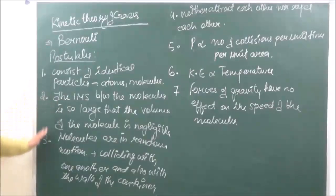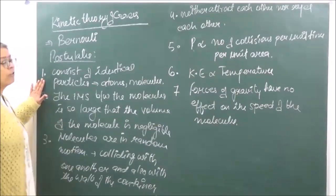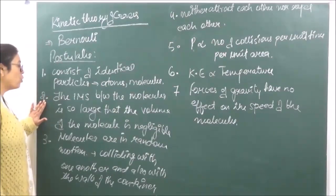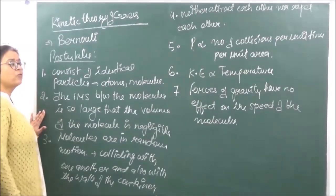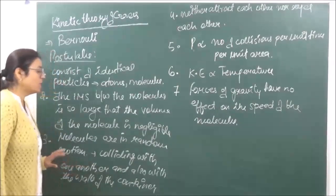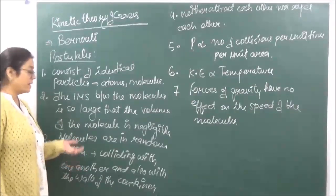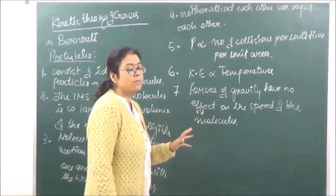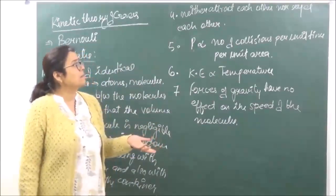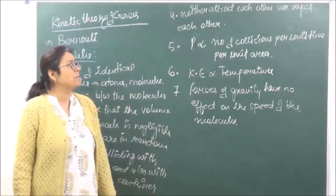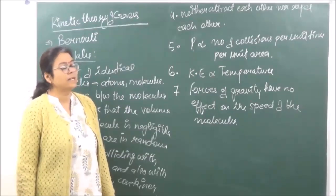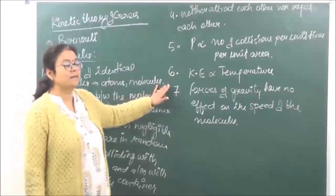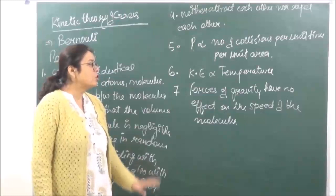So these were the postulates. Let's go through them once again. The kinetic theory of gases says: all gases consist of identical particles — atoms or molecules. The intermolecular space is so large that the volume of a molecule is negligible compared to the total volume of the gas. Molecules are in random motion, colliding with one another and with the walls of the container — hence they exert pressure. They neither attract nor repel each other. Pressure is directly proportional to number of collisions per unit time per unit area. Kinetic energy is directly proportional to temperature. And forces of gravity have no effect on the speed of the molecules.